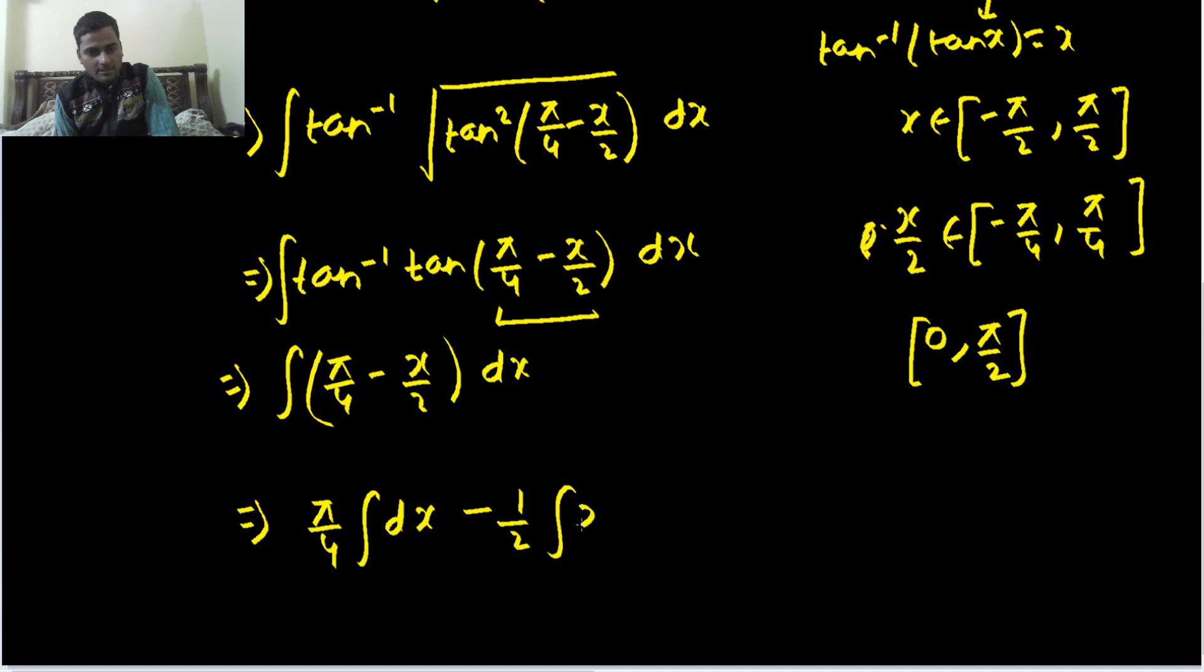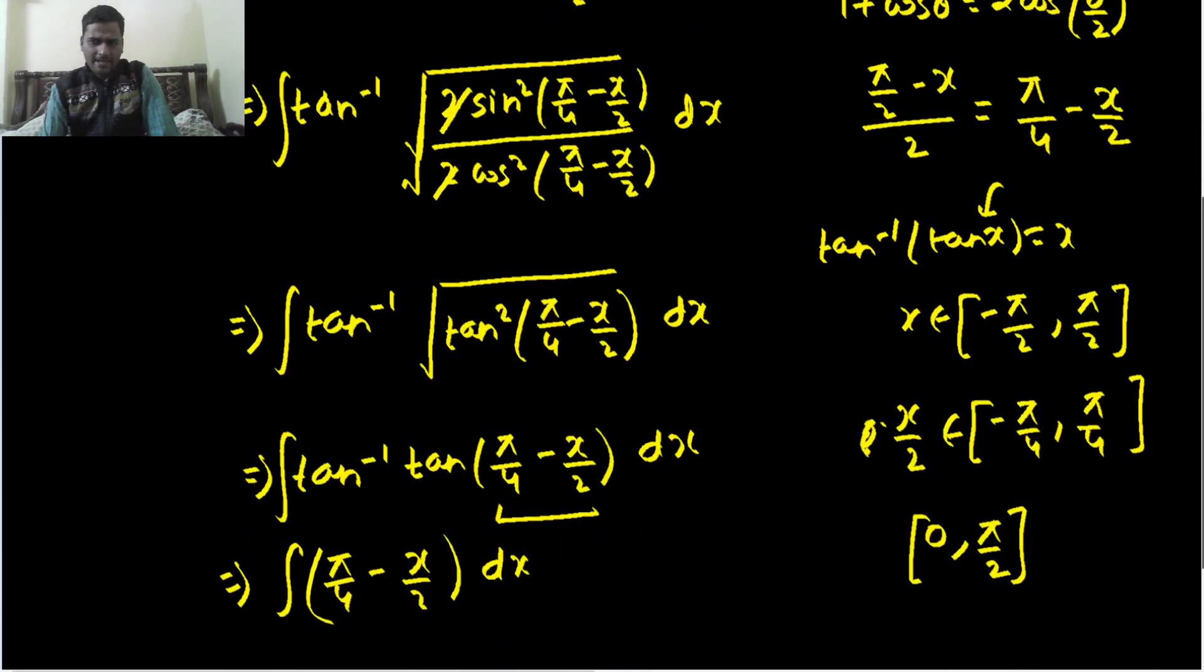π/4 is a constant, minus 1/2 is a constant. So π/4 is a constant, so π/4 x. Minus integration of x is x squared by 2, so x squared by 4 plus a constant. Simple one.